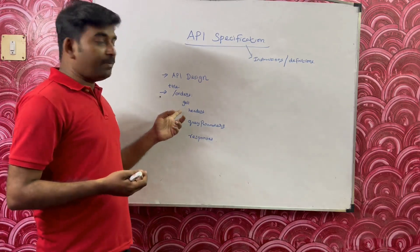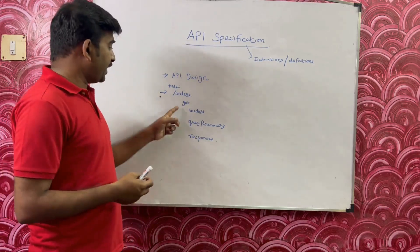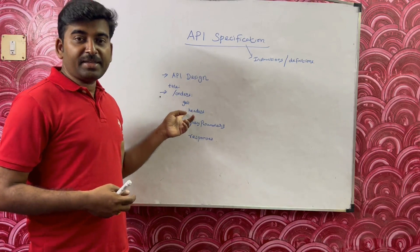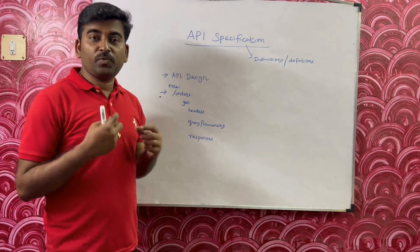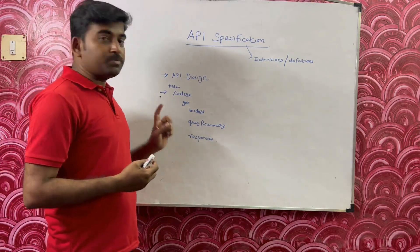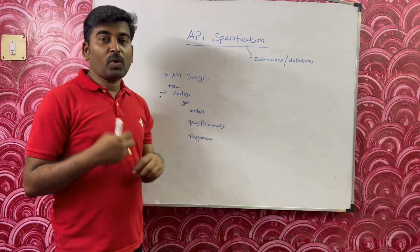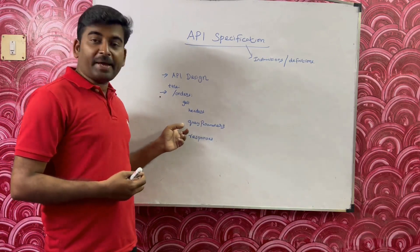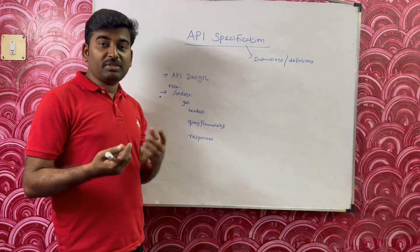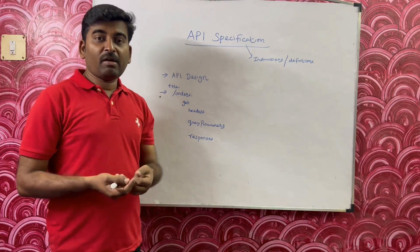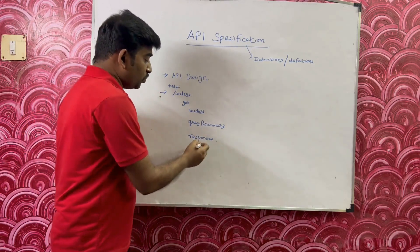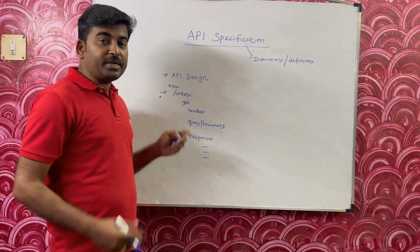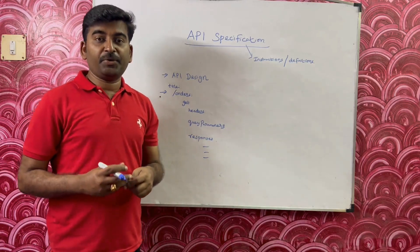In a particular endpoint, what are the different methods available — here I have only a GET method. In the GET method I'm giving instructions about my API: when someone calls the orders resource using the GET method, what parameters they need to send, any headers or query parameters. Those kinds of things are required for the GET method. When they call it, what kind of response they will receive — those response details or sample responses you can mention here. This way you can tell your definition or instruction about your API to anyone.